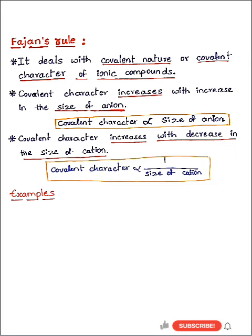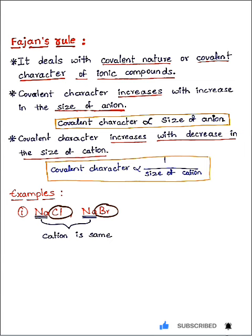We have sodium chloride and sodium bromide. The cation is same in both, so the covalent nature will depend upon the anion. We know that the radius of bromide ion is greater than chloride ion, so as per Fajan's rule, NaBr is more covalent in these two compounds.